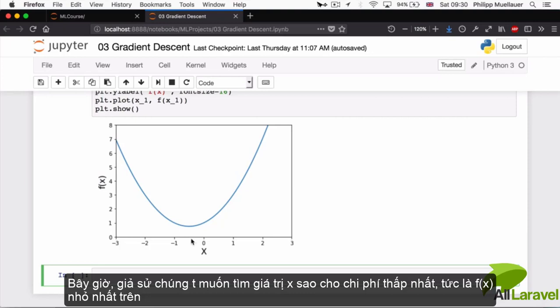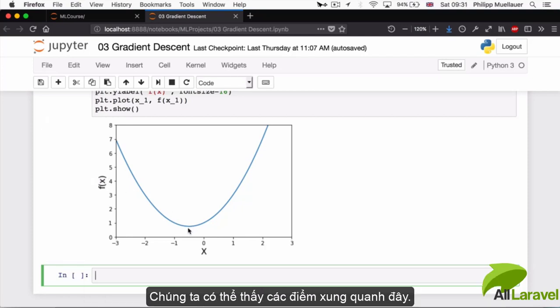Now suppose we want to find the value of x that minimizes the cost, that minimizes f of x. So on the graph we can already see that that point would be around here. But let's think about this problem a bit more deeply.